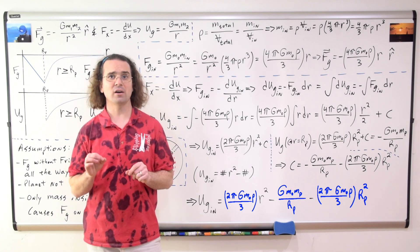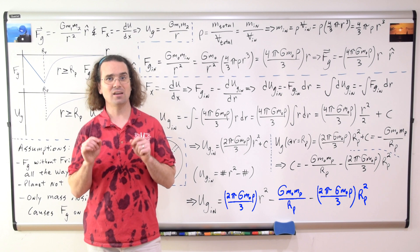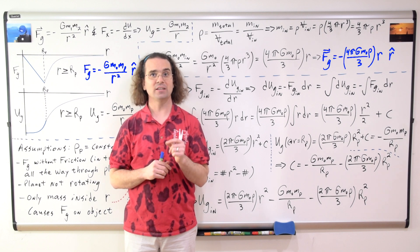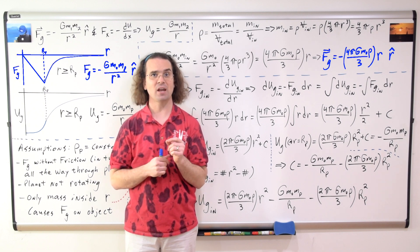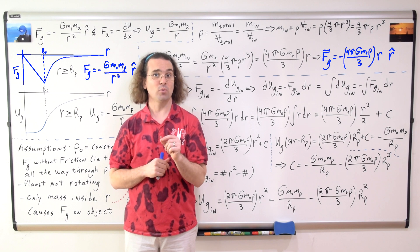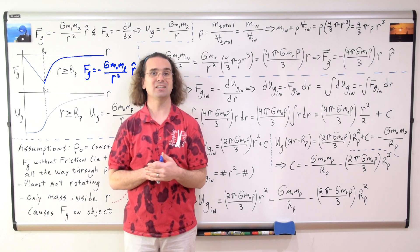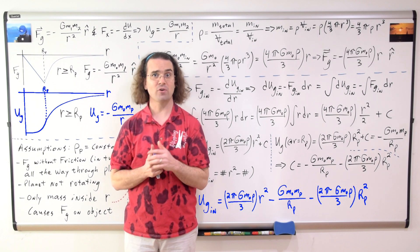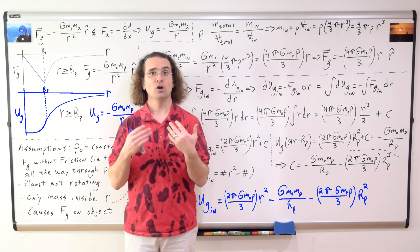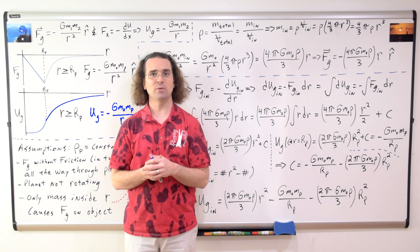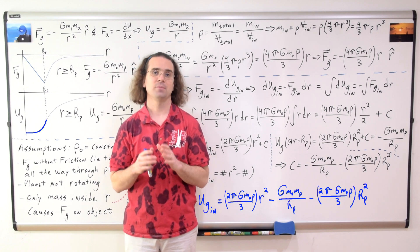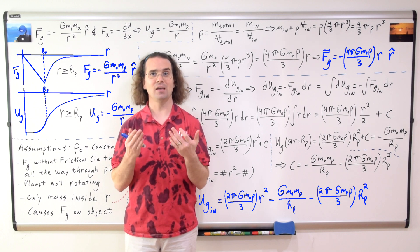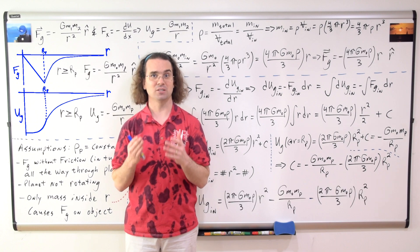So there we have our answers. We have equations and graphs for the force of gravitational attraction between an object and a planet — both when the object is outside the planet and when it is inside. We also have equations and graphs for the universal gravitational potential energy — both outside and inside the planet. It is worthwhile to take a few moments to look at the graphs specifically.